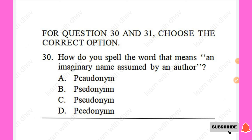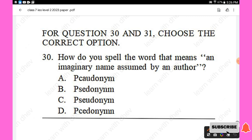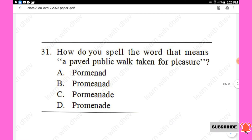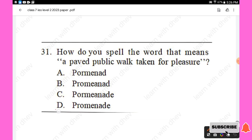For questions 30 and 31, choose the correct option. Question 30: How do you spell the word that means an imaginary name assumed by an author? The word is 'pseudonym.' Option C is the correct spelling. Question 31: How do you spell the word that means a paved public walk taken for pleasure? The word is 'promenade.' Option D is the correct spelling.